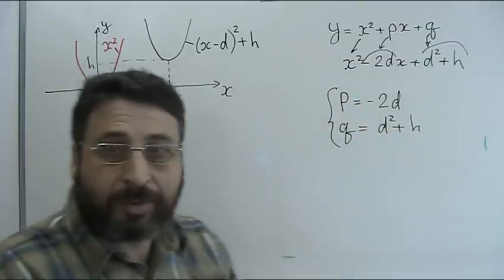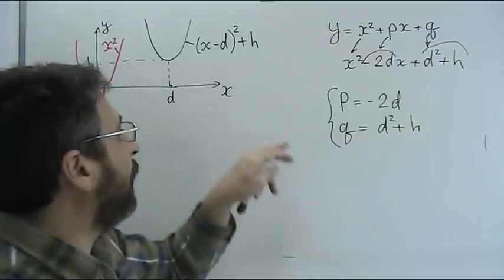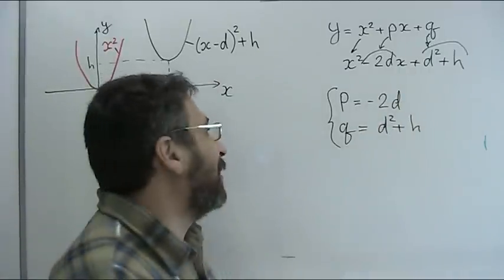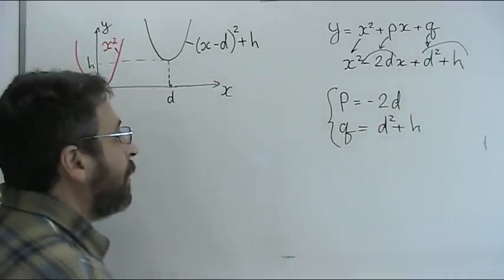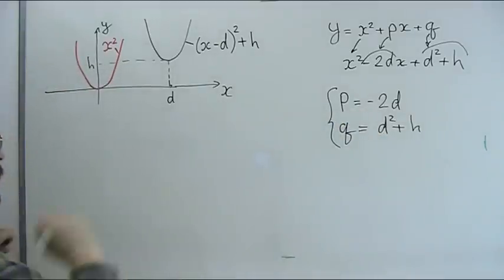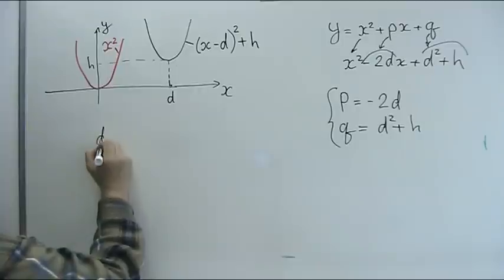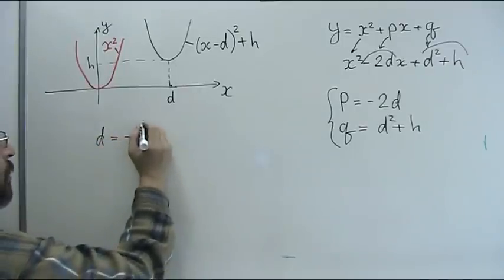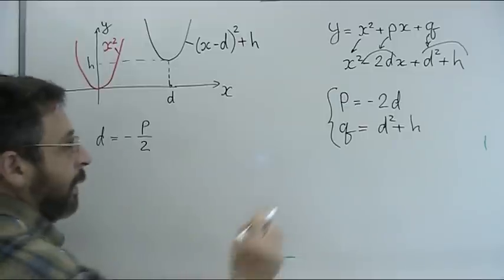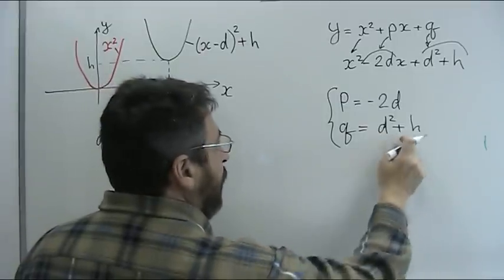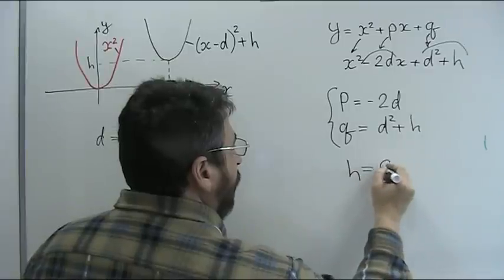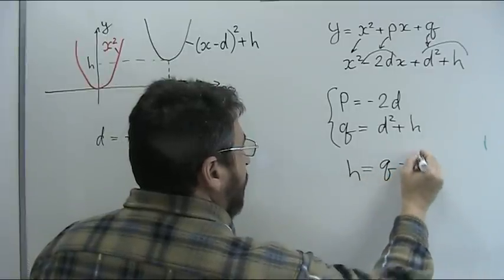p = -2d and q = d² + h. I should remind you that we are interested to find the d and h in order to build graph of our quadratic function. So d can be easily expressed from the first equation.